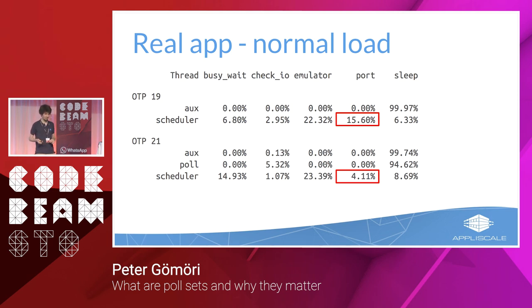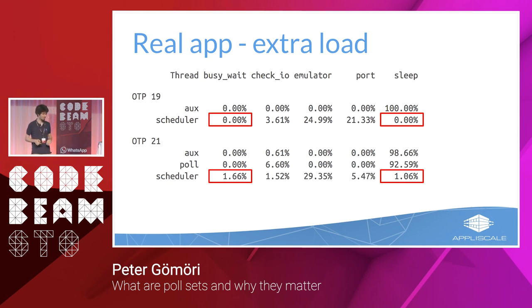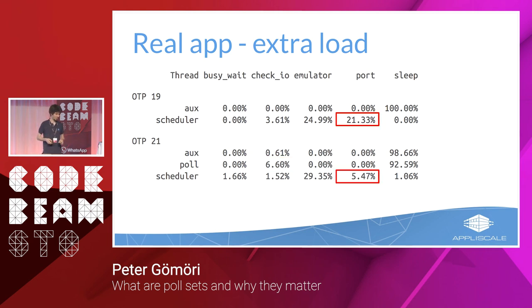With extra load, in OTP 19 sleep time is zero and busy wait is zero — it's fully utilized, struggling to cope. Whereas in OTP 21 there's still 1–2% sleep time and busy wait, so it still has spare capacity. Looking at check_io, it's 6.6% — so even while the OTP 19 node was struggling, the OTP 21 node has a lot more capacity for external IO handling. And the port task gets even worse in OTP 19 — over 20% of time spent there — whereas in OTP 21 it's still around 5%.